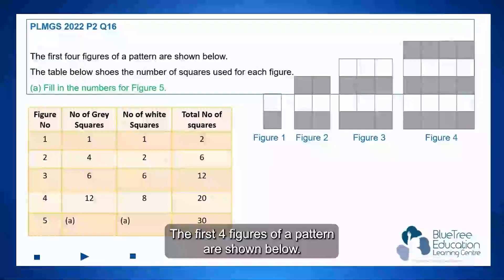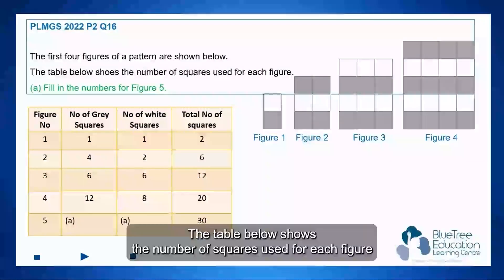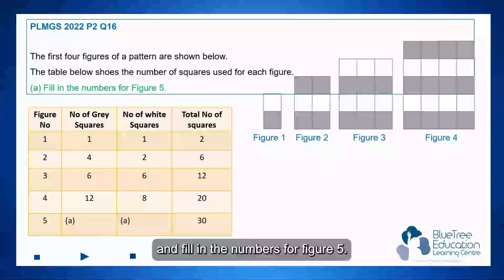The first four figures of a pattern are shown below. The table below shows the number of squares used for each figure, and we need to fill in the numbers for figure 5.